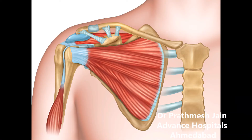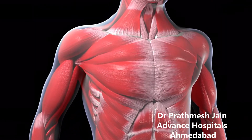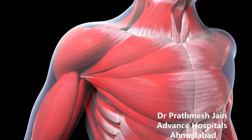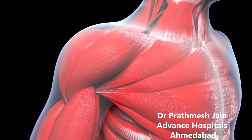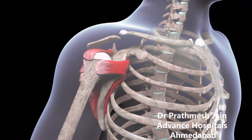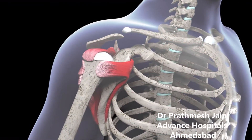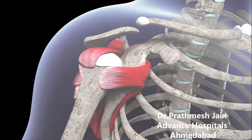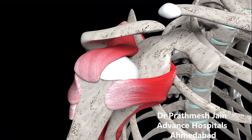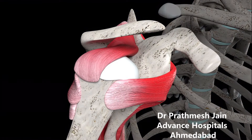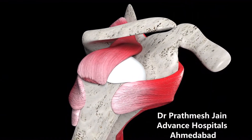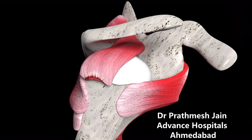Sometimes there are muscles on the anterior aspect and posterior aspect of the shoulder. Here you can see the muscles — this is the top muscle of the shoulder. This is called the supraspinatus and you can have a tear in the supraspinatus in this zone.